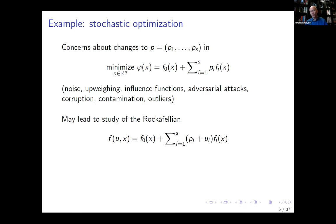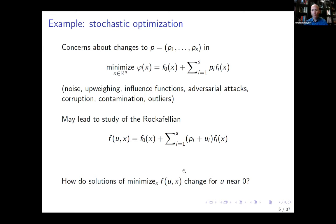One potential Rockefellian in this context introduces a vector u representing a change to the probabilities p. When u equals zero, we are back to the actual problem. We might be worried about what happens to the solution — which may correspond to neural networks — when we change u away from zero. This is at the bottom of much analysis related to upweighing, influence functions, outlier analysis, and things like that.